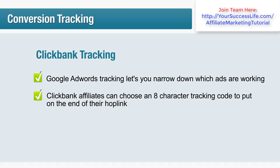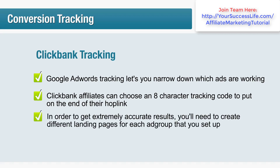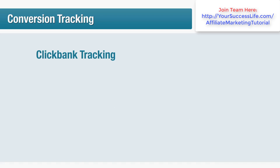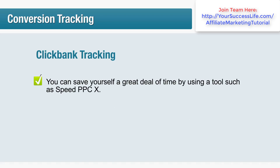You can then log into Clickbank, go to Reporting Analytics, and see how many sales came from each ad group. Assuming you own a website and are sending traffic to a landing page before forwarding visitors to your affiliate offer, you'll need to create different landing pages for each ad group, each with a different Clickbank tracking ID, so you know which landing page generated the sale. You can do this manually, or save time by using a tool such as Speed PPC, which will generate all of your landing pages, ad groups, ad text and keywords.